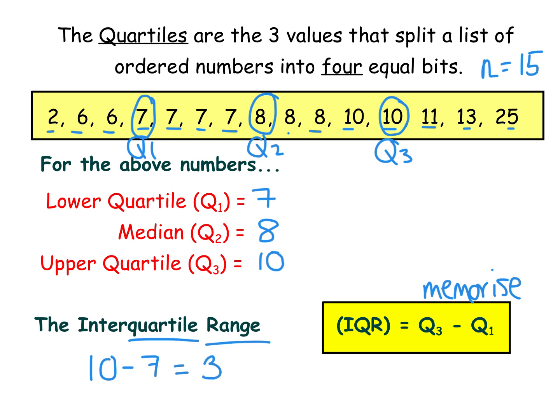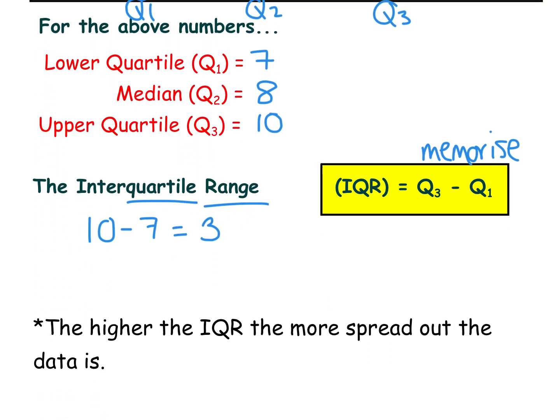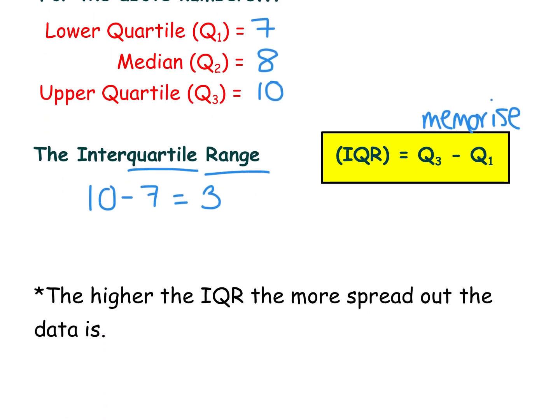This number of 3 means absolutely nothing right now, unless you've got something to compare this to. So it's worth noting that the higher the interquartile range, the more spread out the data is. So if I do another example, and my interquartile range turns out to be higher, then those numbers I'm using are more spread out. So let's look at example 2.